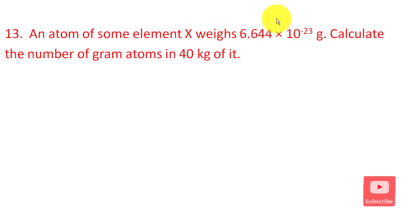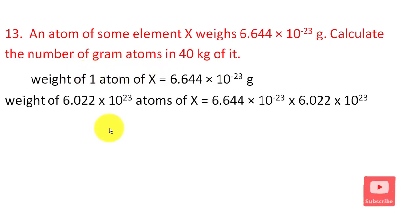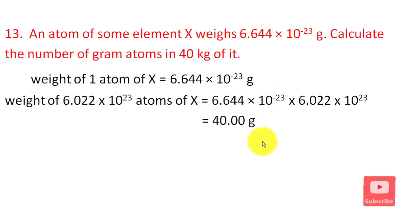The next question asks: how many gram atoms are there, and what is the weight of 1 atom? For 1 mole, there are 6.022 × 10²³ atoms. The atomic weight of this element is 40 g per mole.